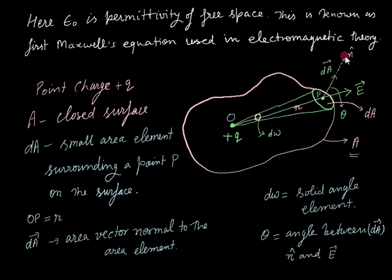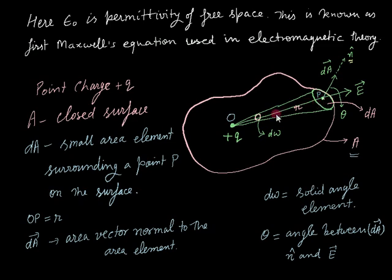The electric field lines pass through the area element dA making an angle theta, as seen earlier. Vector E and vector dA are shown here. The distance from center O to point P is r. The area vector is normal to the area element. d-omega is the solid angle element — the elementary area subtending an angle at point O — and theta is the angle between dA and the unit vector n and E.